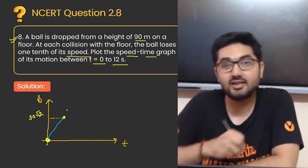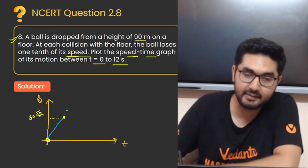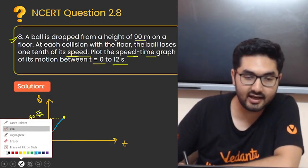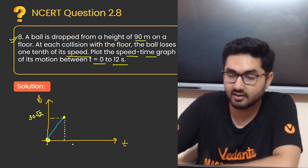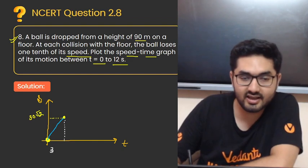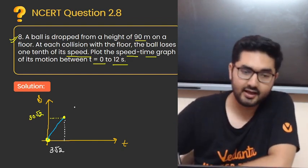Thik hai, yahan se aapne ek line draw karegi, jate waqt. Ab baad mein kya hua, iski speed kitni hogi? Yahan par time bhi likh lijiye, isko time kitna laga yahan se yahan aane mein? Agar aap time note karna chahe, to time laga 3 root 2. Time laga iska 3 root 2.